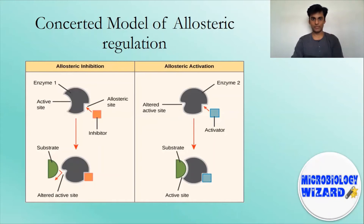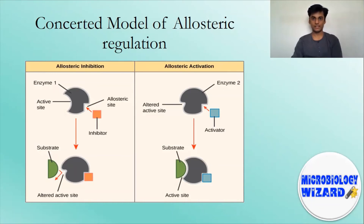In order to understand the role of the allosteric site in regulation of enzyme activity, the following model is represented. One subunit of the enzyme contains the allosteric site, whereas the other subunit contains the active site. The regulator molecule — inhibitor or activator — can bind to the allosteric site. The binding causes a conformational change in the subunit having the allosteric site, which results in conformational changes in neighboring subunits sequentially, ultimately affecting the subunit having the active site. As a result, the conformation of the active site is altered and the corresponding effect of inhibition or activation is exerted.